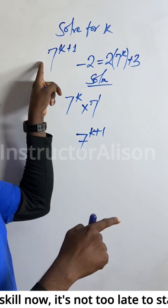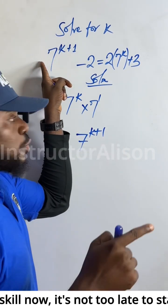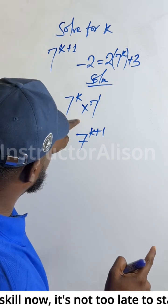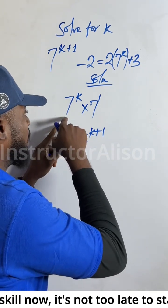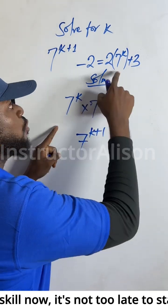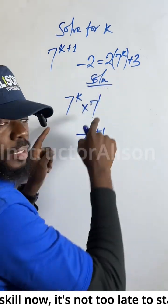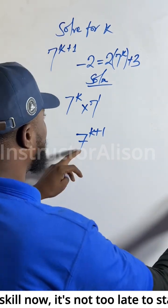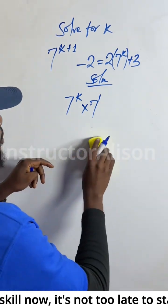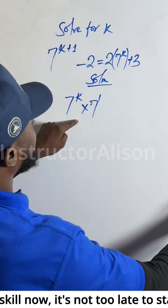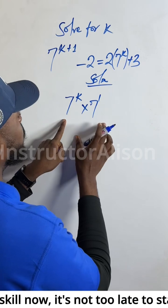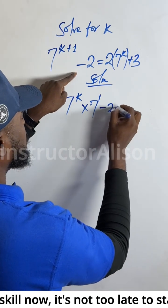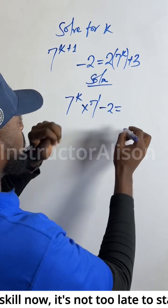Now this will not give us back this guy. So why I reduce this one to this particular point? I want to make the one we carry — 7 to the power of k — resemble this one. So if we do that, this one and this one are the same thing. I just bring them from this side, come this way.